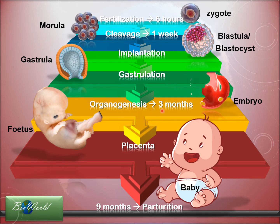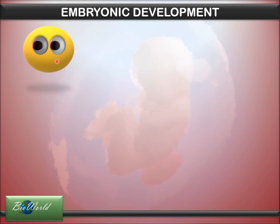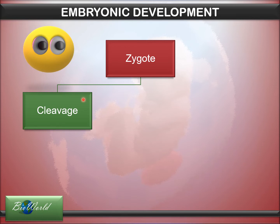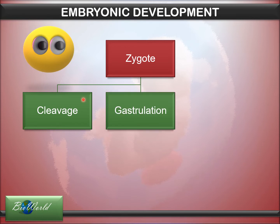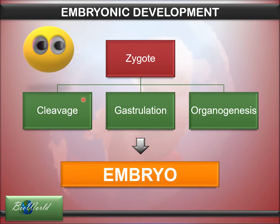For today's video I will be explaining the process of transformation from zygote right up to organogenesis — what we call embryonic development. Our story begins with sperm and ova, where fertilization occurs to form the zygote. The zygote will first carry out cleavage in the first week, following that gastrulation, and ending with organogenesis. After organogenesis is completed, the structure will be called an embryo. Let's start with cleavage.